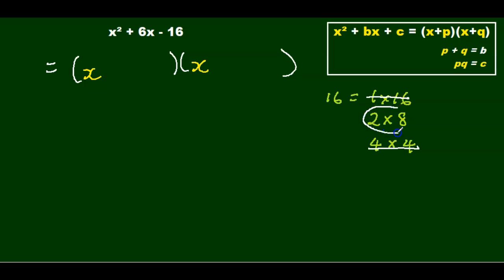But we like this one, because 8 minus 2 gives me 6. So I'm going to put an 8 and a 2. It doesn't matter in which order. But we want to get a positive 6, so I'm going to put a plus 8 and a minus 2, because plus 8 minus 2 gives me 6.